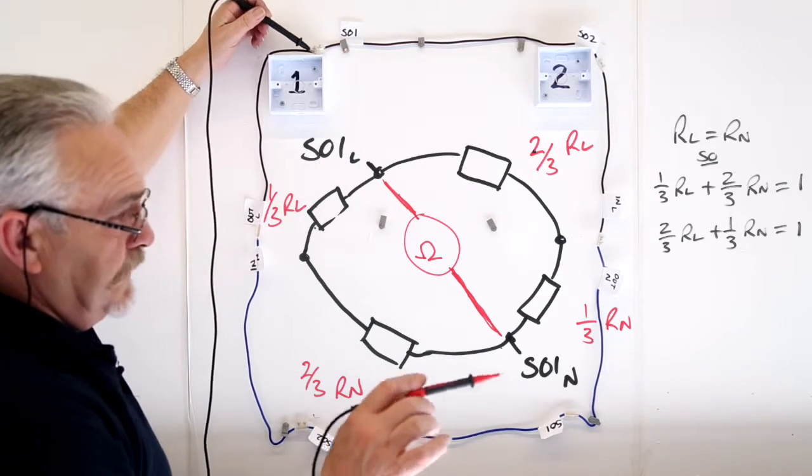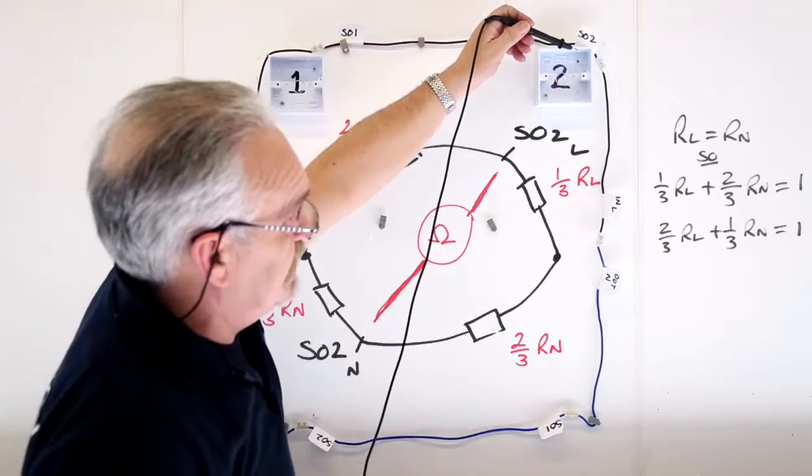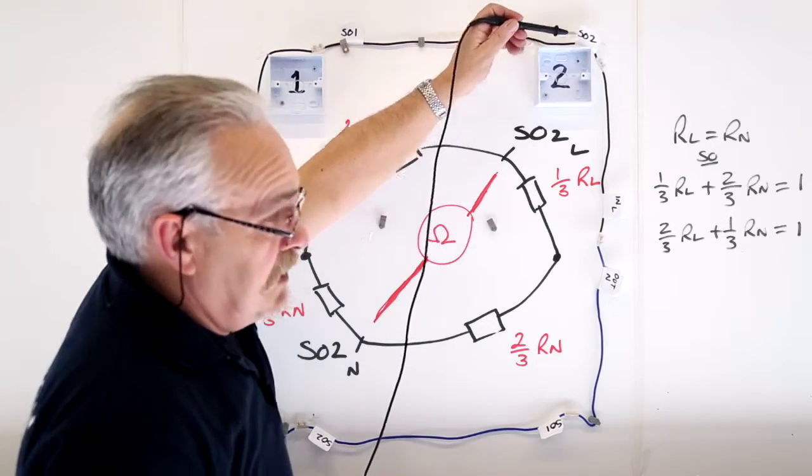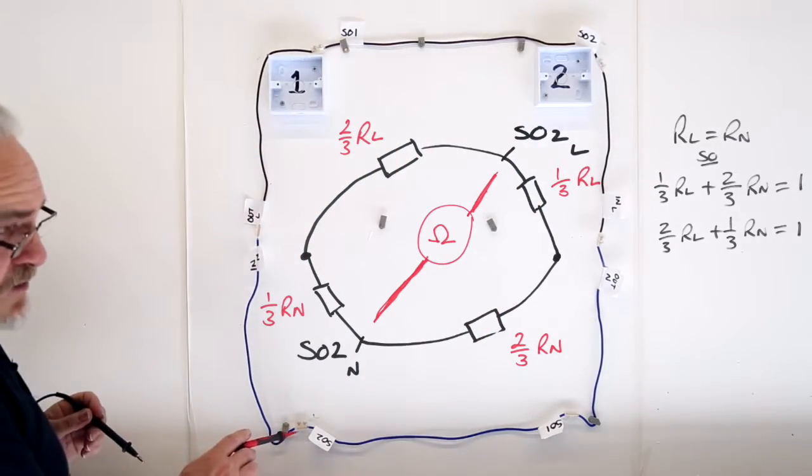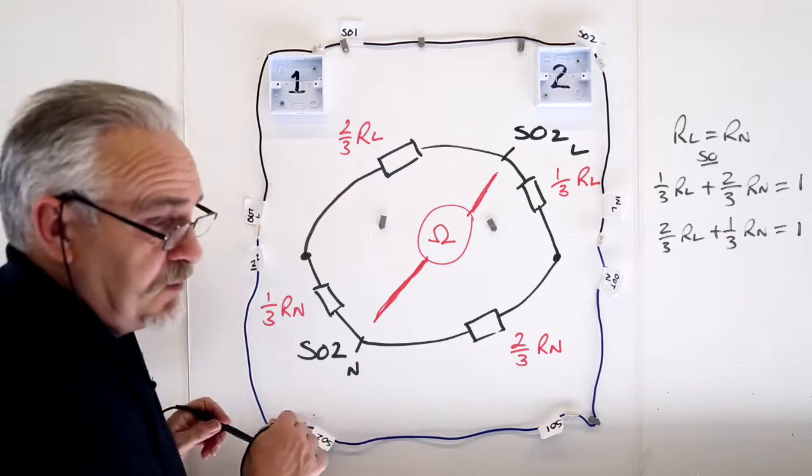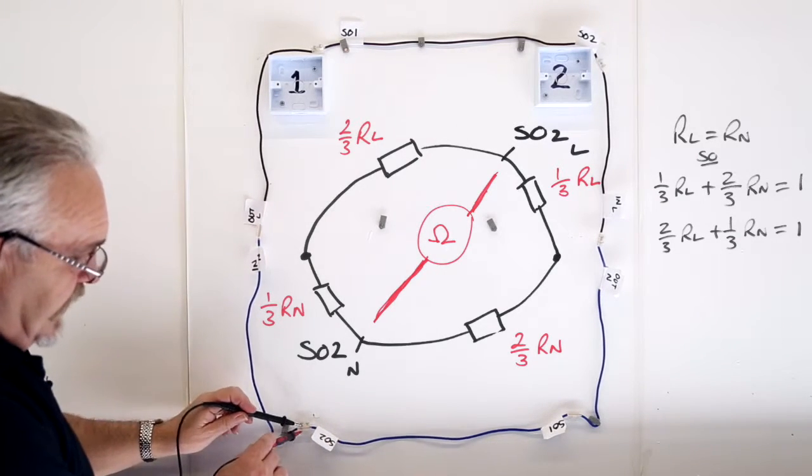Same result. Socket outlet two there. I find my corresponding neutral, the opposite end of the circle. I know it's a squared one but it's a circle.